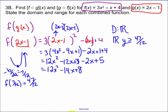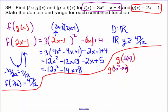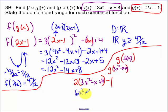Now we need to find the composition the other way: g of f of x. In g of x I'm plugging in my f of x function, which is 3x squared minus x plus 4. My g of x is 2x minus 1, but x is now 3x squared minus x plus 4. Simplifying: 6x squared minus 2x plus 8 minus 1, which gives 6x squared minus 2x plus 7.